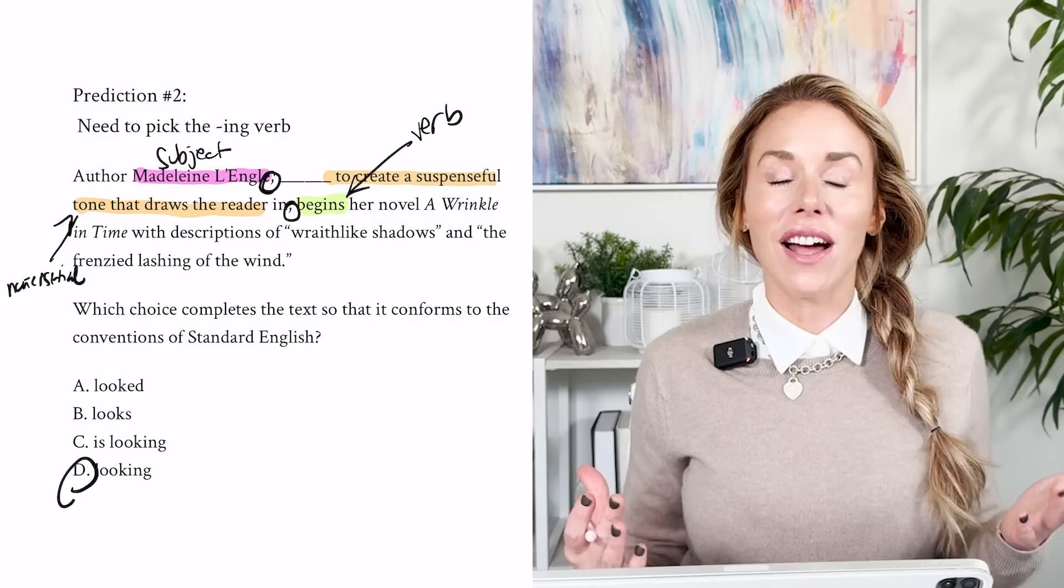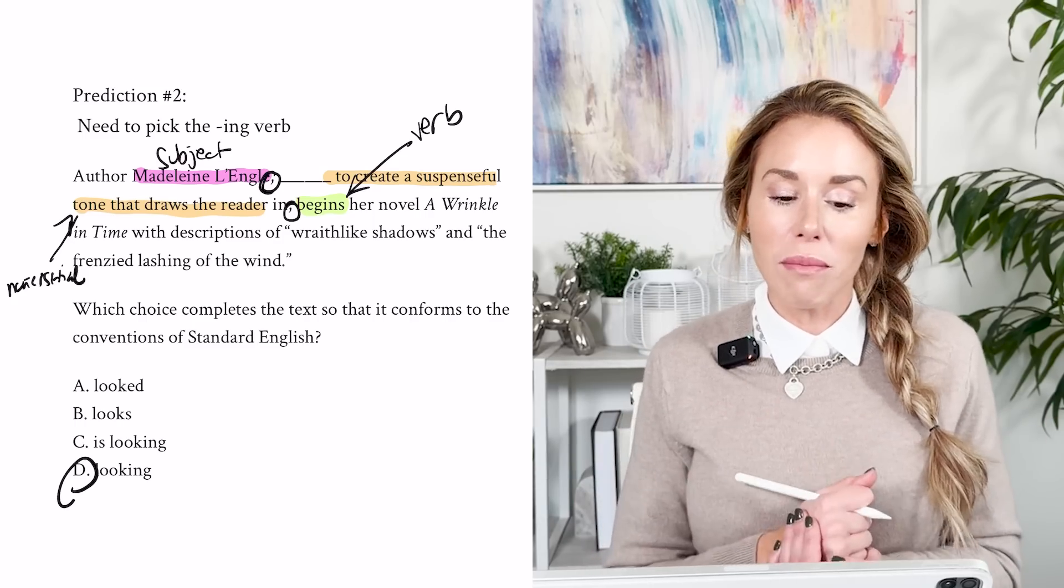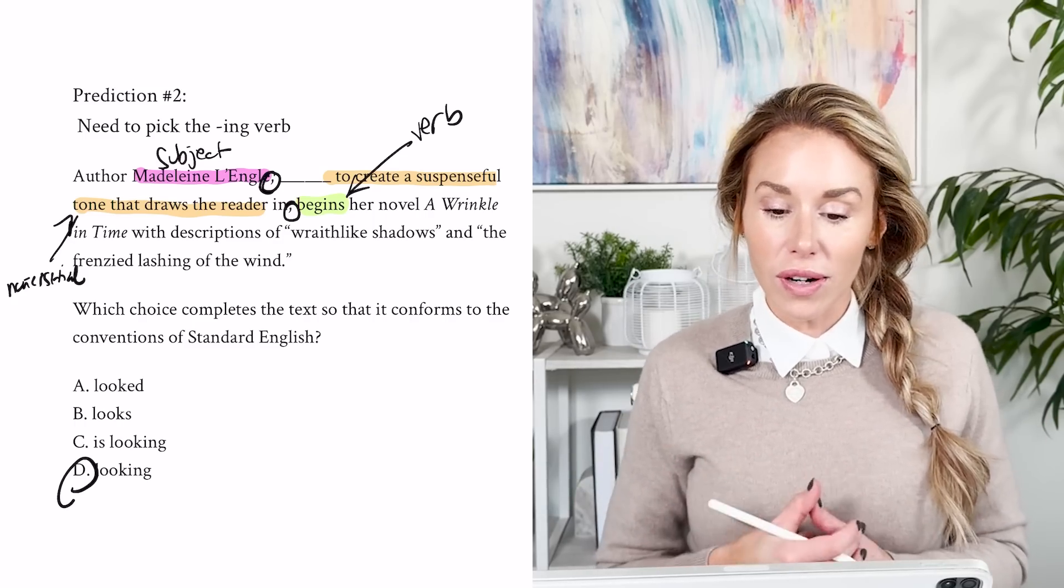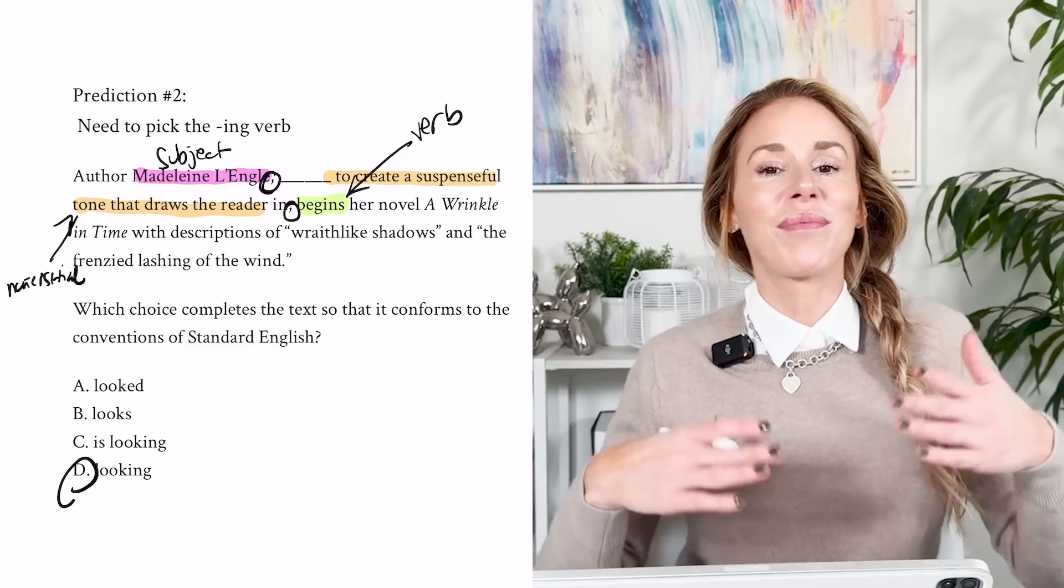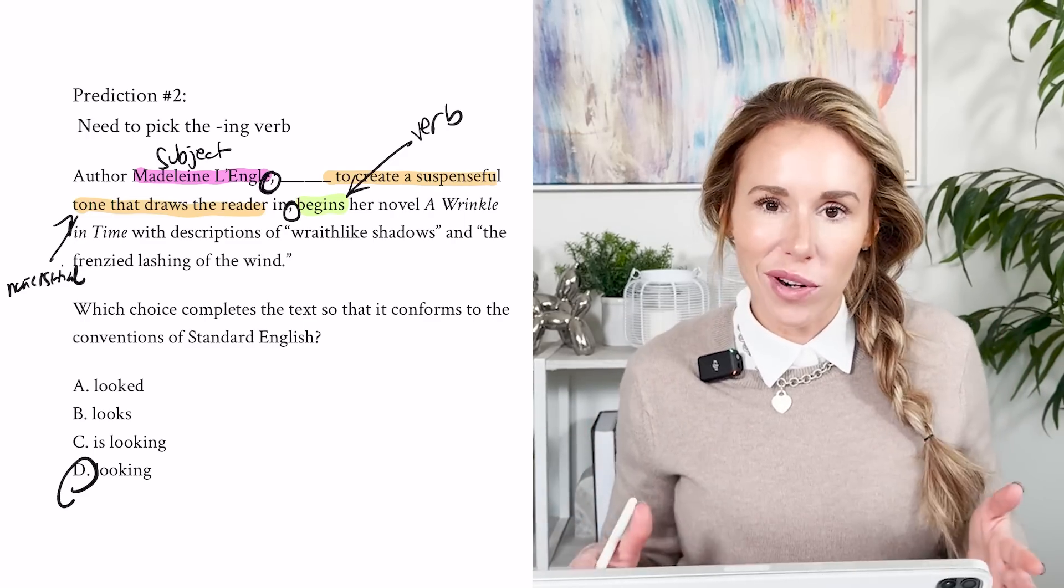So the best thing to do to keep something non-essential is to pick an ing verb looking. When I read it out loud, you'll be able to tell that it sounds great. So author Madeline L'Engle, looking to create a suspenseful tone that draws the reader in, begins her novel A Wrinkle in Time. As you can see, it works great.